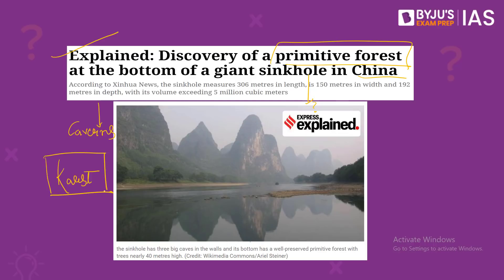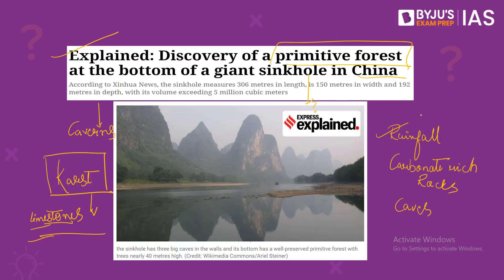This brings us to the topic of karst topography. Karst topography is the formation of landforms due to solution and deposition on limestone by the action of groundwater or surface water. It is found in regions with a large stretch of water-soluble rocks such as limestone at the surface or subsurface levels. Abundant rainfall, carbonate-rich rocks, and caves are all features of karst topography.